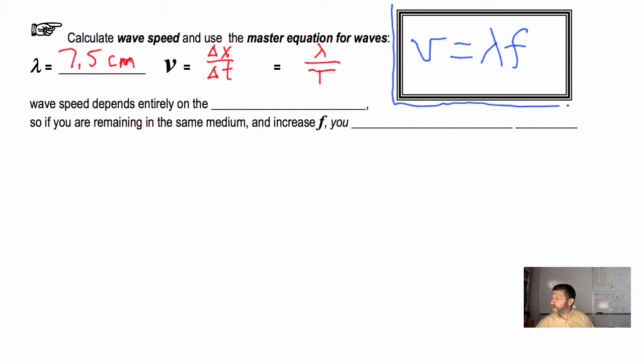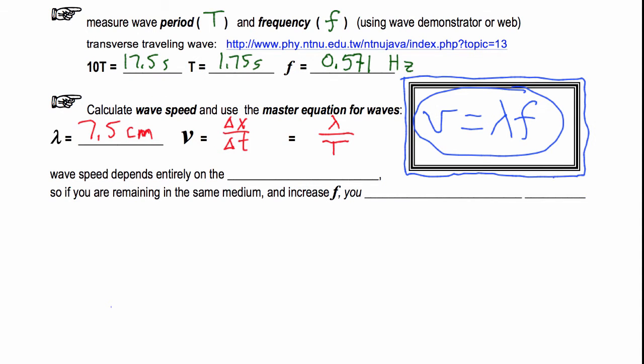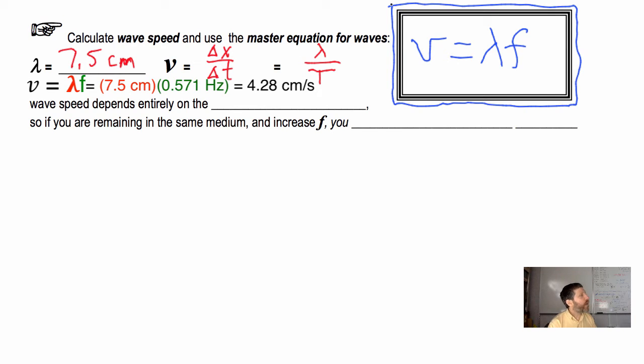V equals lambda f, and I'd say if you're going to do a wave problem, there's a good chance you're going to use this equation. V, the wave speed, is lambda times f. Now let's go ahead and use this information we've already measured to calculate the wave speed of our wave. Right here, we have the frequency of our wave, and right here we have the wavelength of our wave. To get wave speed, all we need to do is multiply lambda times f, or the wavelength times the frequency, 7.5 centimeters times 0.571 hertz, giving us 4.28 centimeters per second. Notice that centimeters times hertz, hertz being just one over seconds, gives us centimeters per second.